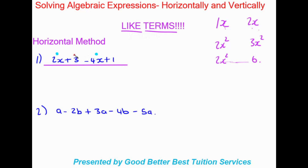I also have a positive 3 which is structured the same as positive 1, so they are like terms. From here, I look at terms under the same color and add or subtract them — only like terms are combined. So we get 2x minus 4x equals negative 2x, and positive 3 plus 1 gives us plus 4. That's the horizontal method for this example.